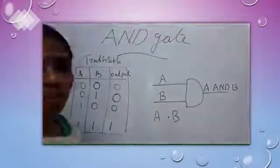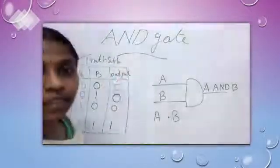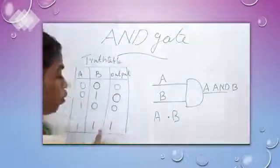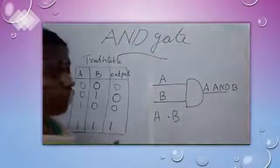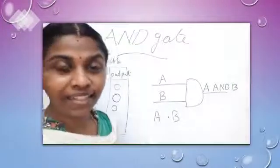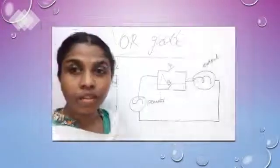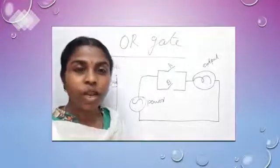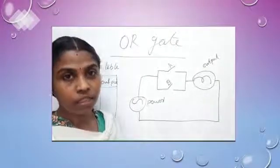What is the important point in the case of AND gate? If all the inputs are one, the output is one. Now, I am going to explain OR gate.